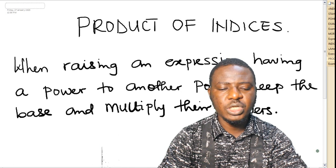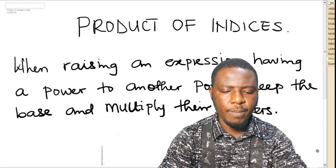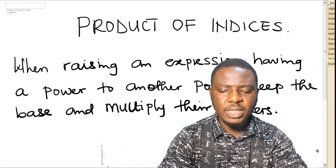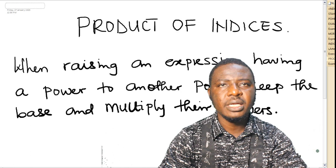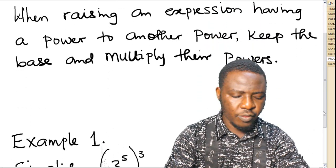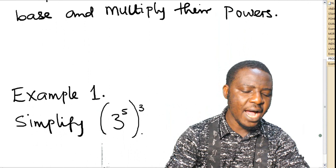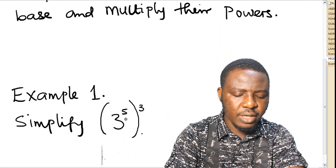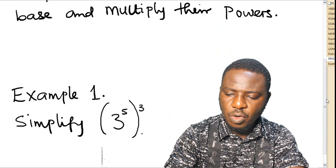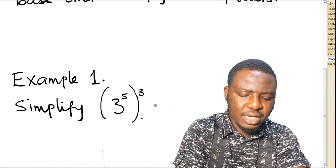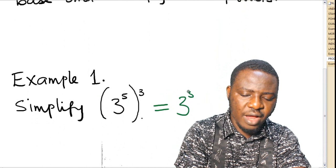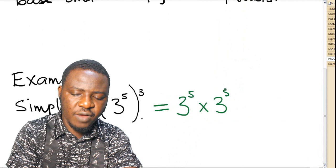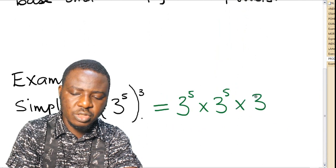In today's class, we shall be looking at the product law — that when raising an expression having a power to another power, we are asked to keep the base and multiply their powers. For example, when you are asked to simplify 3 raised to the power of 5, all cubed, you know that this can be simplified as 3 raised to the power of 5, times 3 raised to the power of 5, times 3 raised to the power of 5.